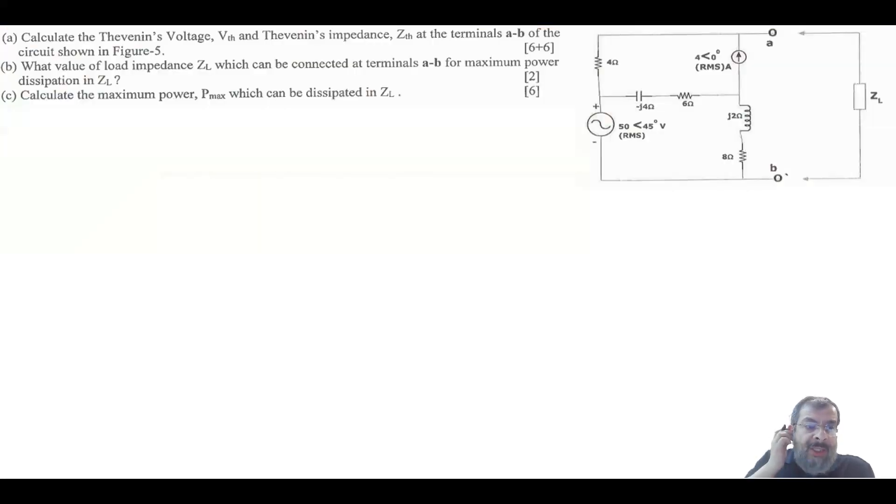So let's start the question. So let's start by finding the V Thevenin and Z Thevenin. Now for the V Thevenin is the V open circuit. So I'd like to find this V Thevenin is the open circuit between these two points. Now all of this basically is just one node.